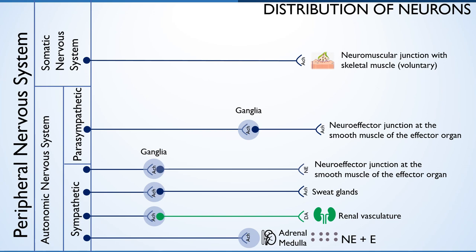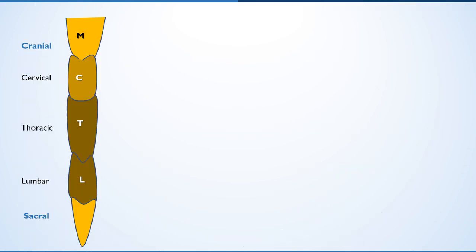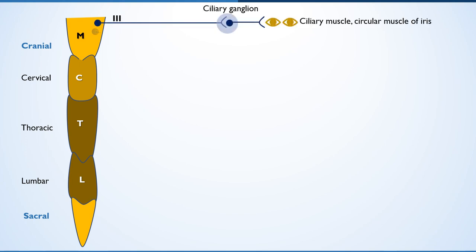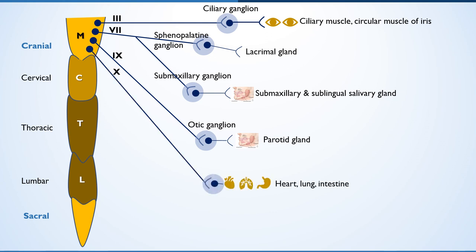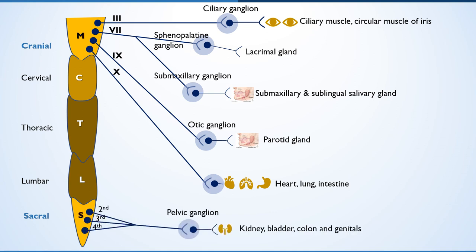The parasympathetic preganglionic fibers are myelinated and emerge from the cranial and sacral region of the central nervous system; hence it is designated as craniosacral outflow. The cranial outflow is carried out by the third (oculomotor), seventh (facial), ninth (glossopharyngeal), and tenth (vagus) cranial nerves. The sacral outflow is carried out by the second, third, and fourth sacral segments of the spinal cord.